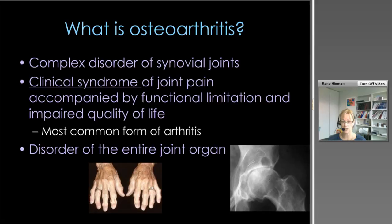Common sites for osteoarthritis — although it can occur in any synovial joint, we frequently see it in the CMC joints of the thumbs, the DIP joints of the fingers, the hips and the knee. At the knee, osteoarthritis can occur in both the tibiofemoral joint compartments and also the patellofemoral joint. Patellofemoral joint OA is quite common and commonly occurs with tibiofemoral joint disease. It can also occur in the facet joints of the spine. Most of the research informing contemporary management of OA is based on people with knee or hip osteoarthritis.